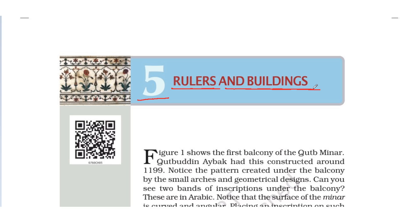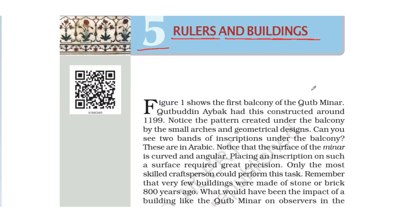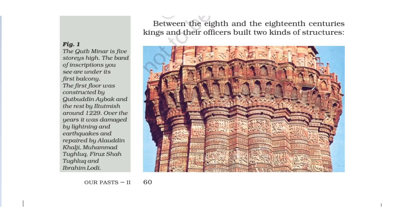So in this chapter, looking at figure number one — the Qutub Minar is five stories high. Each story is a separate floor, a separate building level. The band of inscriptions you see are under its first balcony.